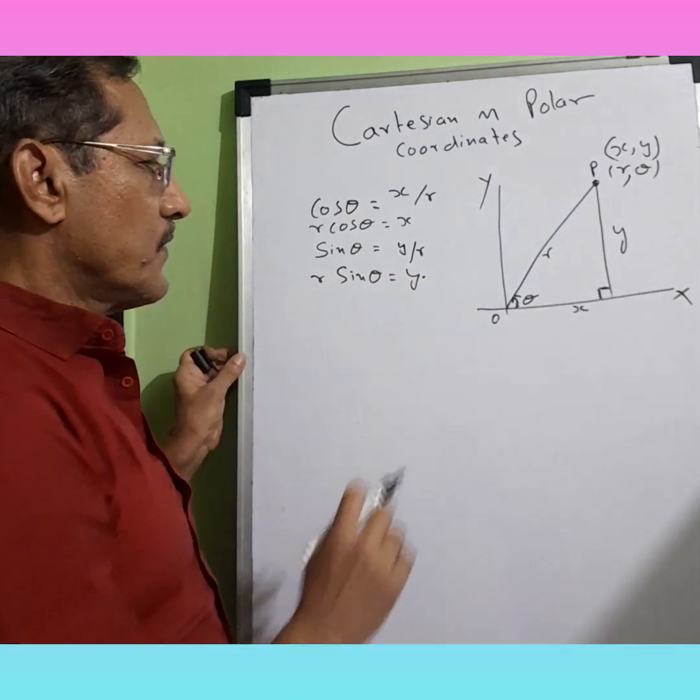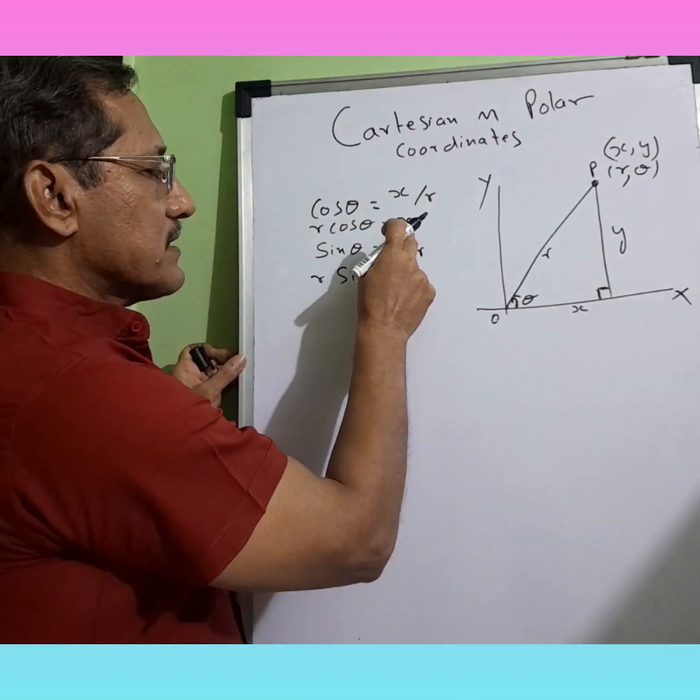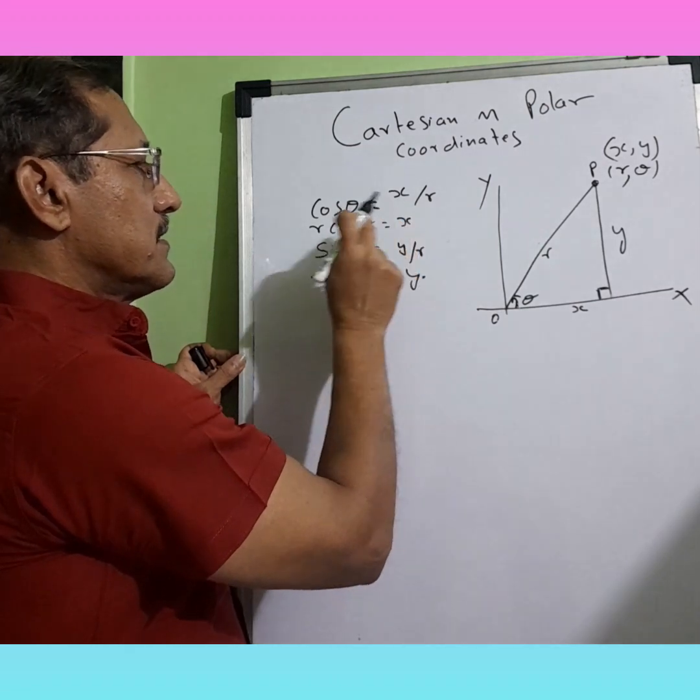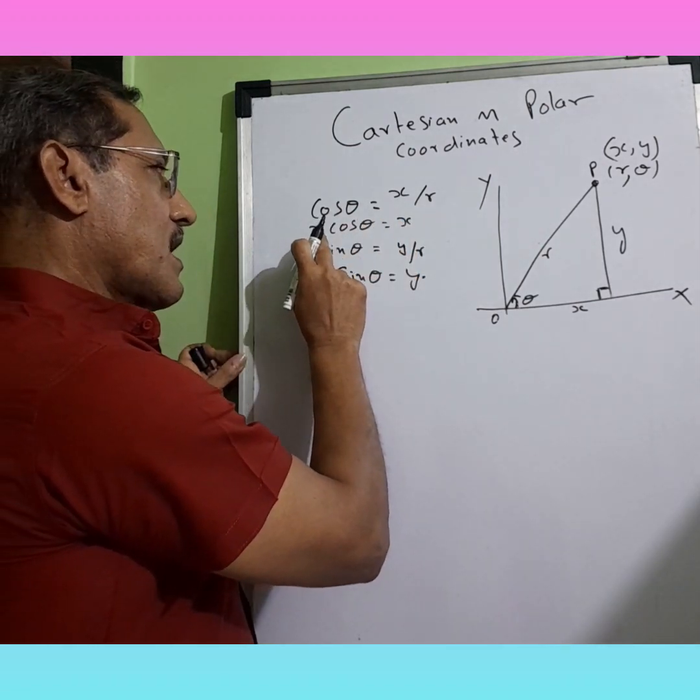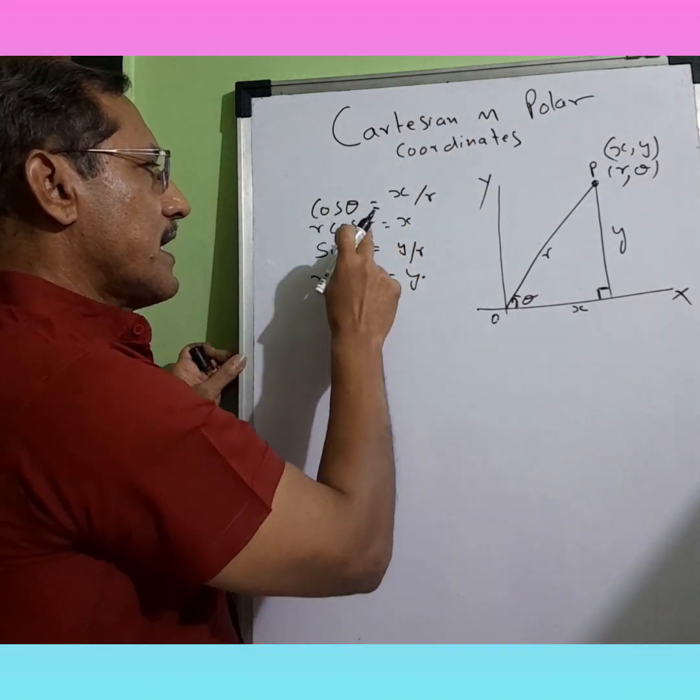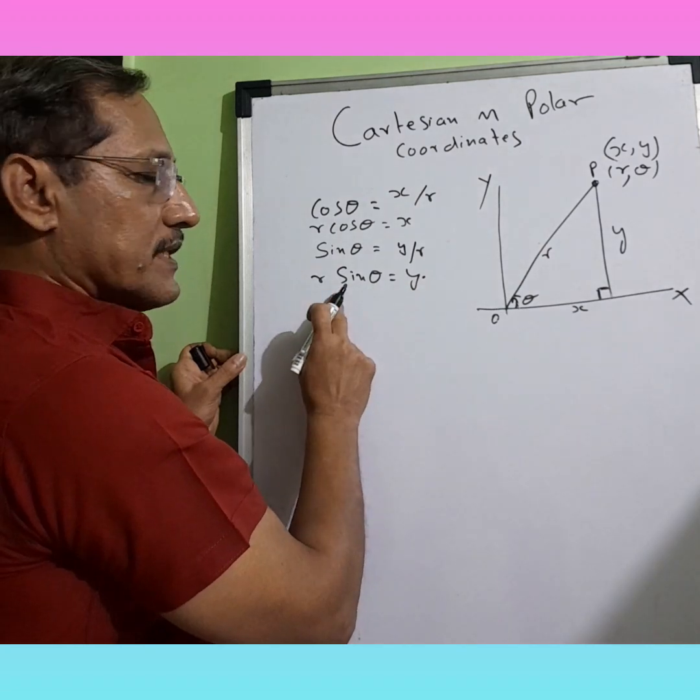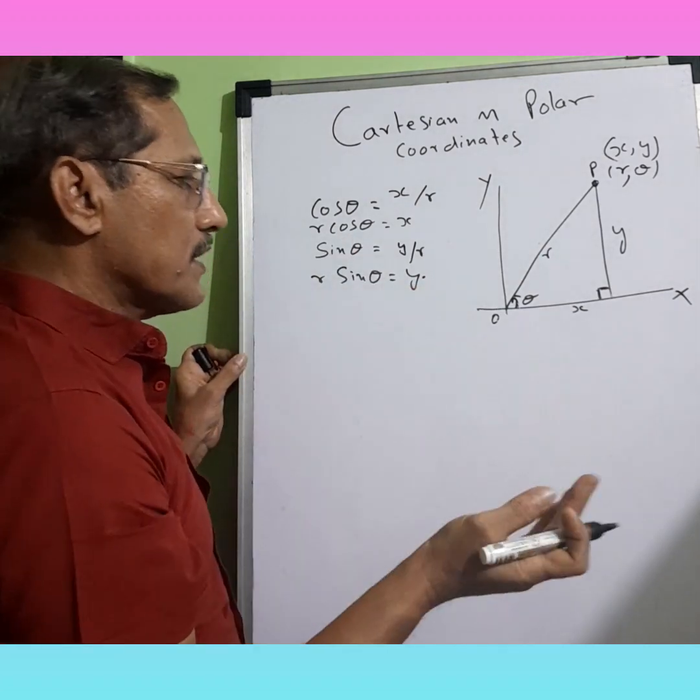So we can correlate X, that is Cartesian coordinate, as R cos theta, which is of polar coordinate, and theta, which is of polar coordinate given for this. Now furthermore...